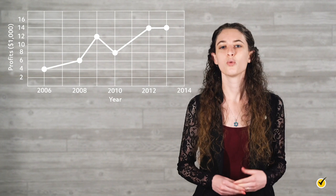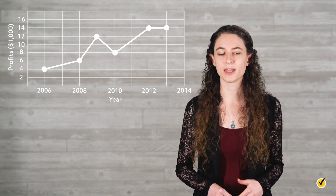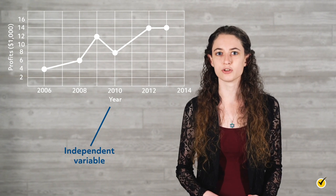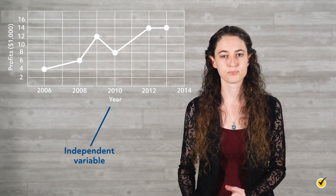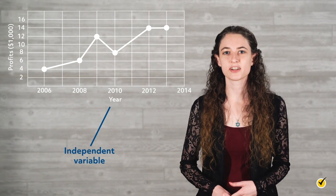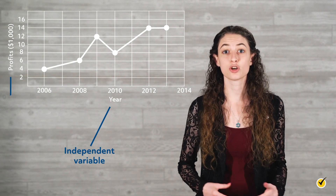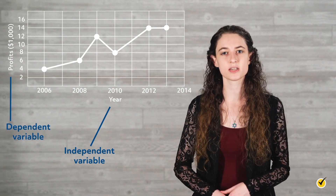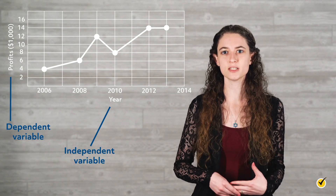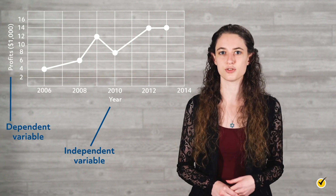Instead, they stayed the same. When constructing a line graph on a coordinate plane, the x-axis is always used to plot the independent variable, and the y-axis is always used to plot the dependent variable. With line graphs, the independent variable is usually time. In the graph we just looked at, the independent variable is years, which is a measurement of time. The dependent variable is the factor that changes over time. In our example, the dependent variable is the company's profits, which increased and decreased from 2006 to 2013.